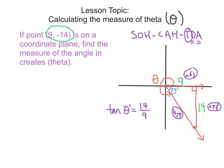We can't take the tangent of a variable on our calculator — we need to use inverse trig. So: theta prime equals the inverse tangent of 14 over 9. We calculate that to be 57.265 degrees.